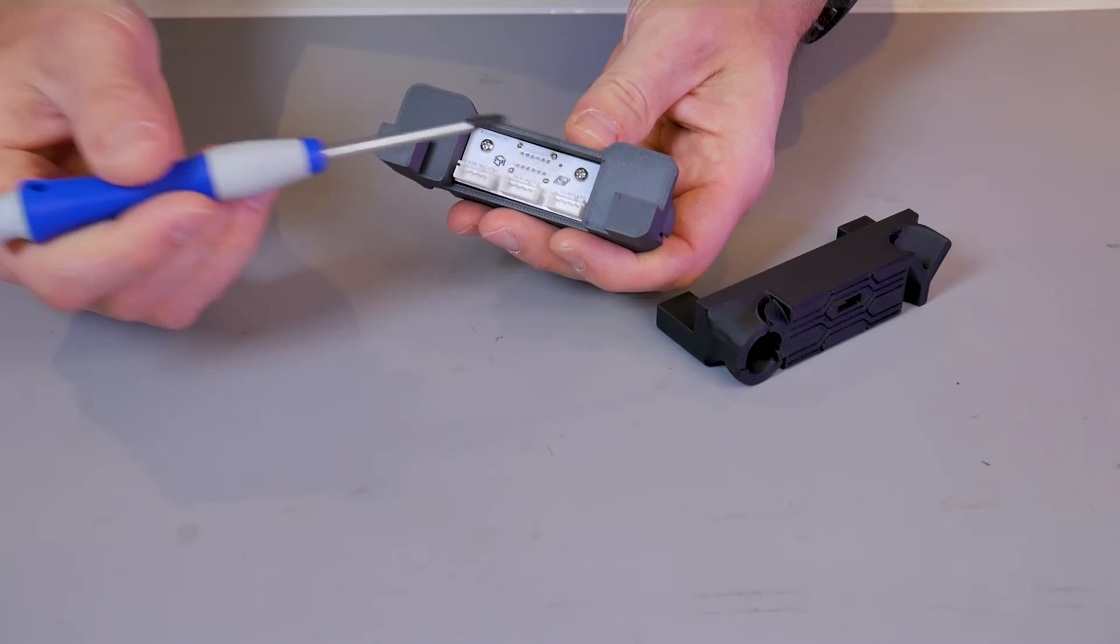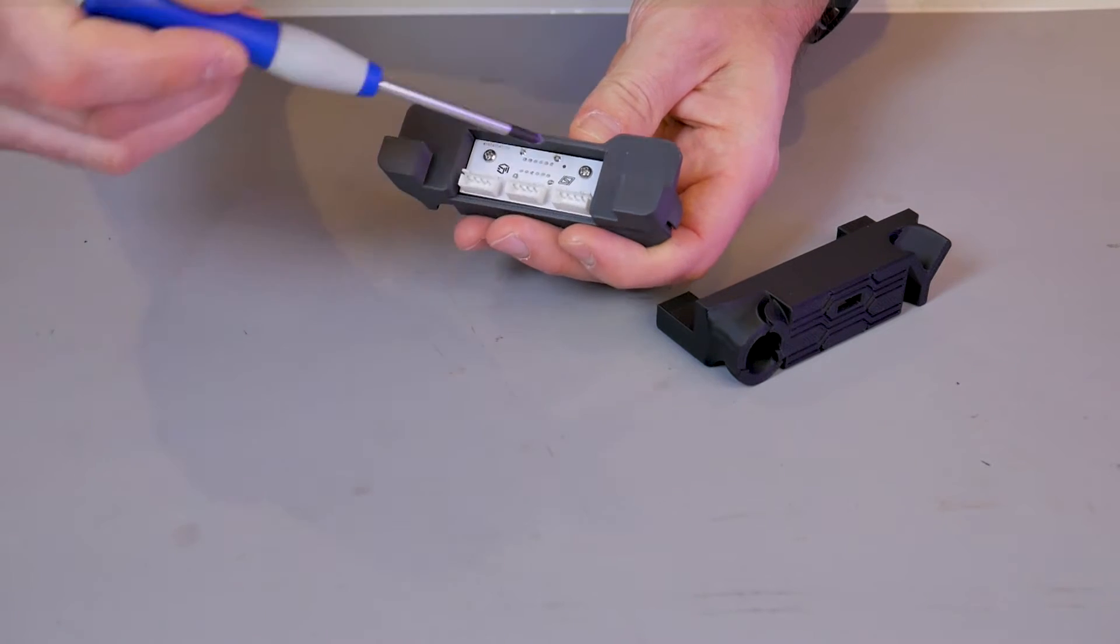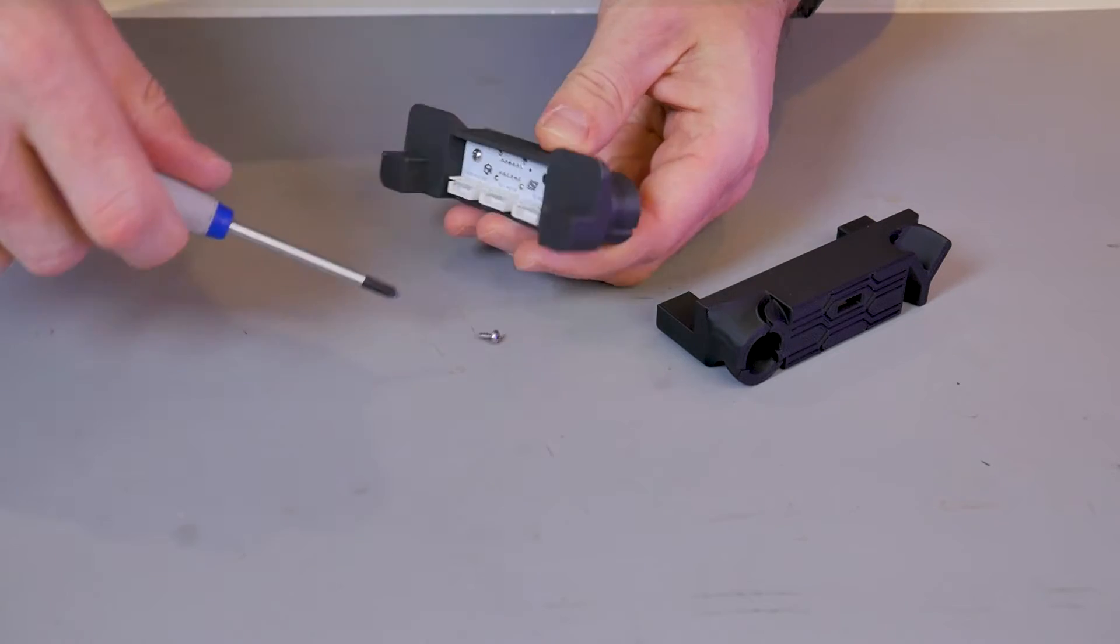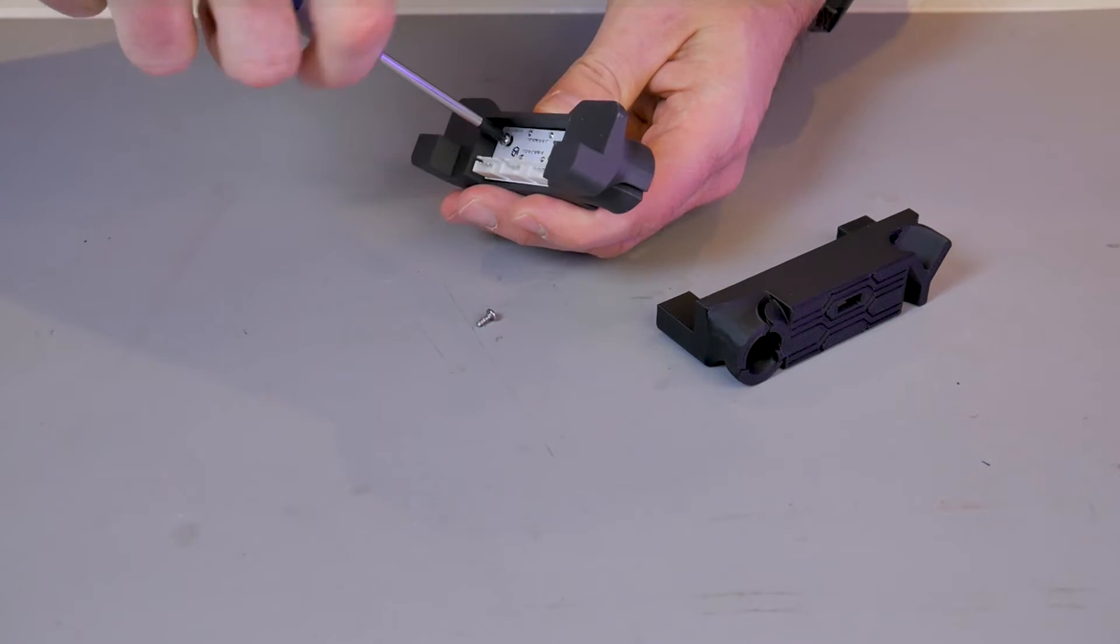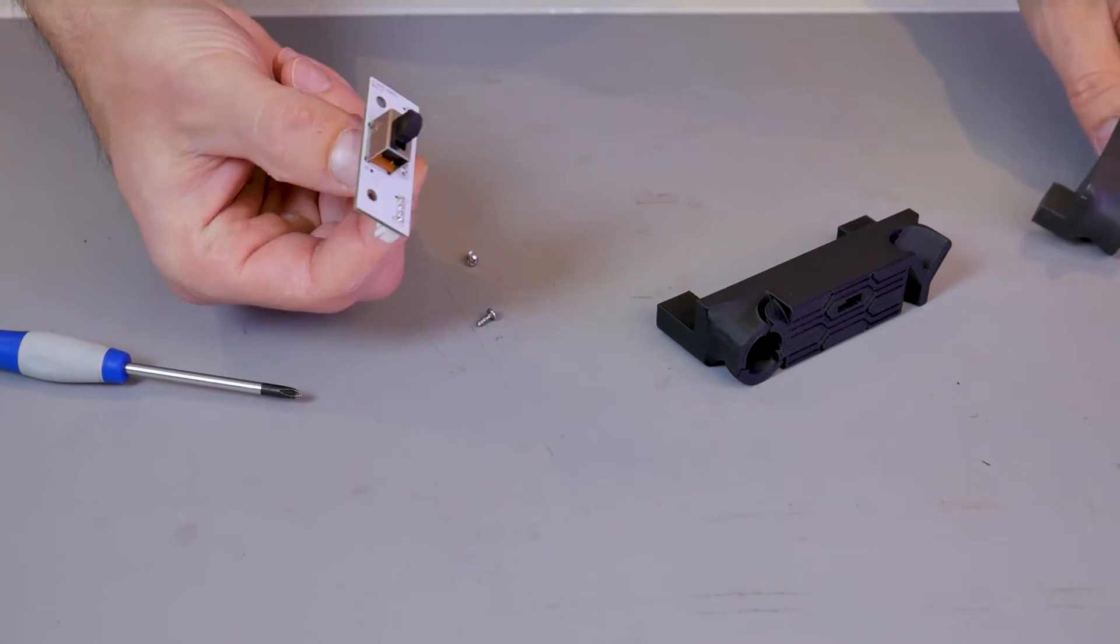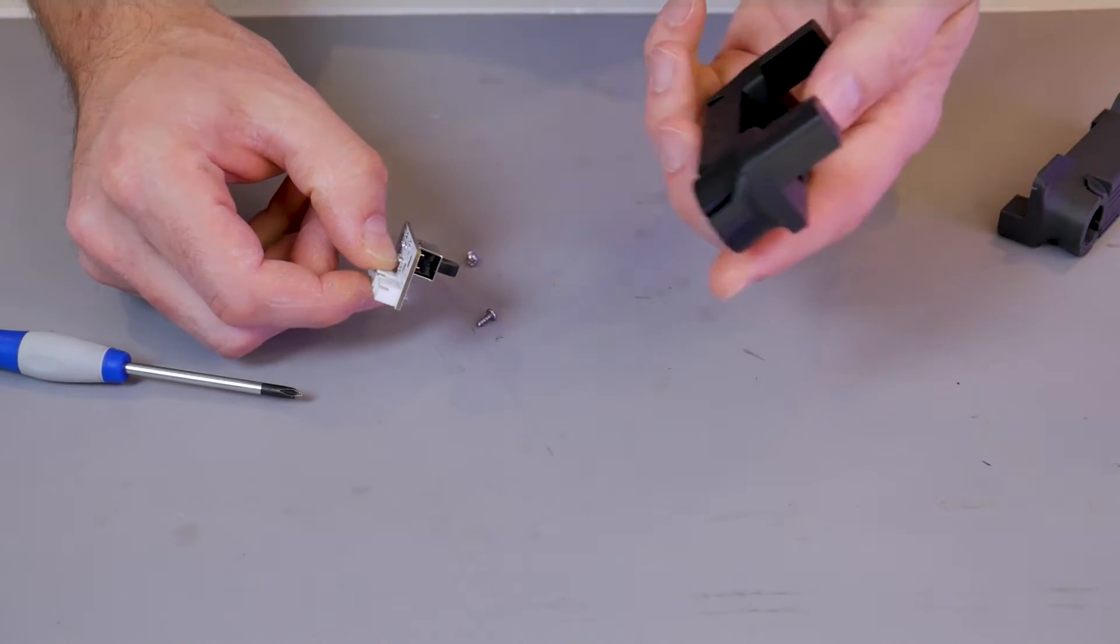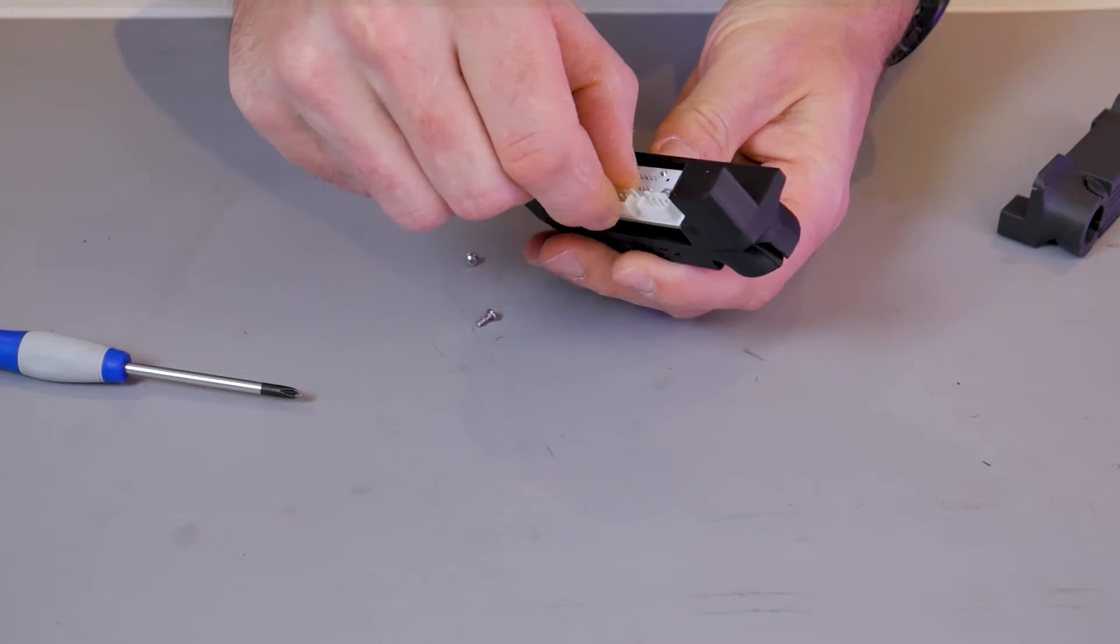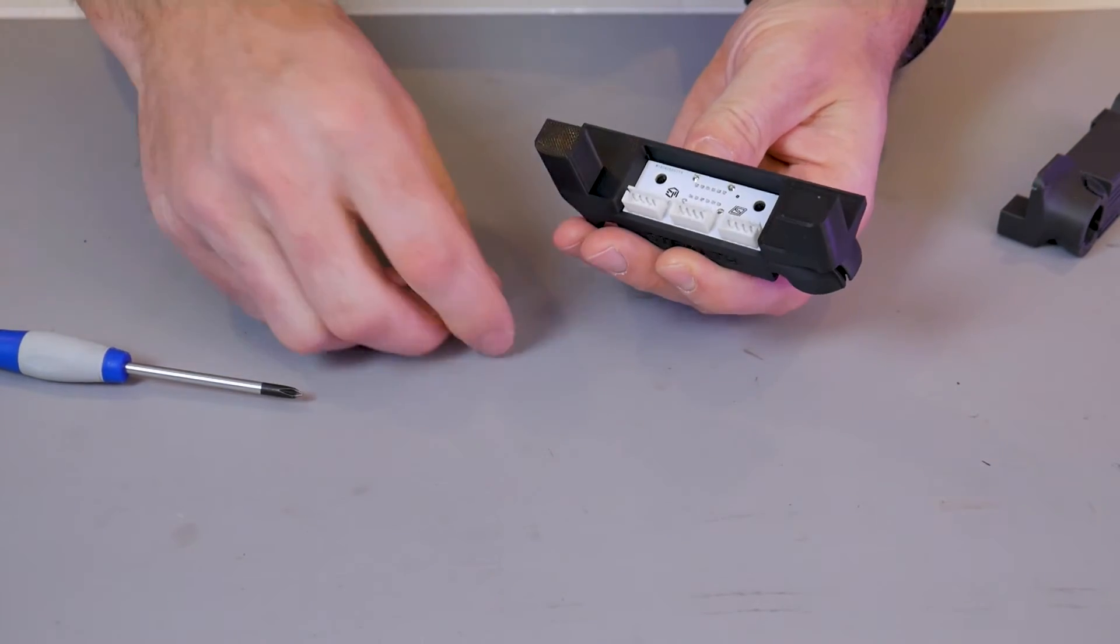If you have the new version already you can ignore this part, but I'm going to show you how to switch from the old version to the new version. All you have to do is remove the two screws at the back and the PCB will come out. Take your new housing, insert the PCB the exact same way, and replace the two screws.